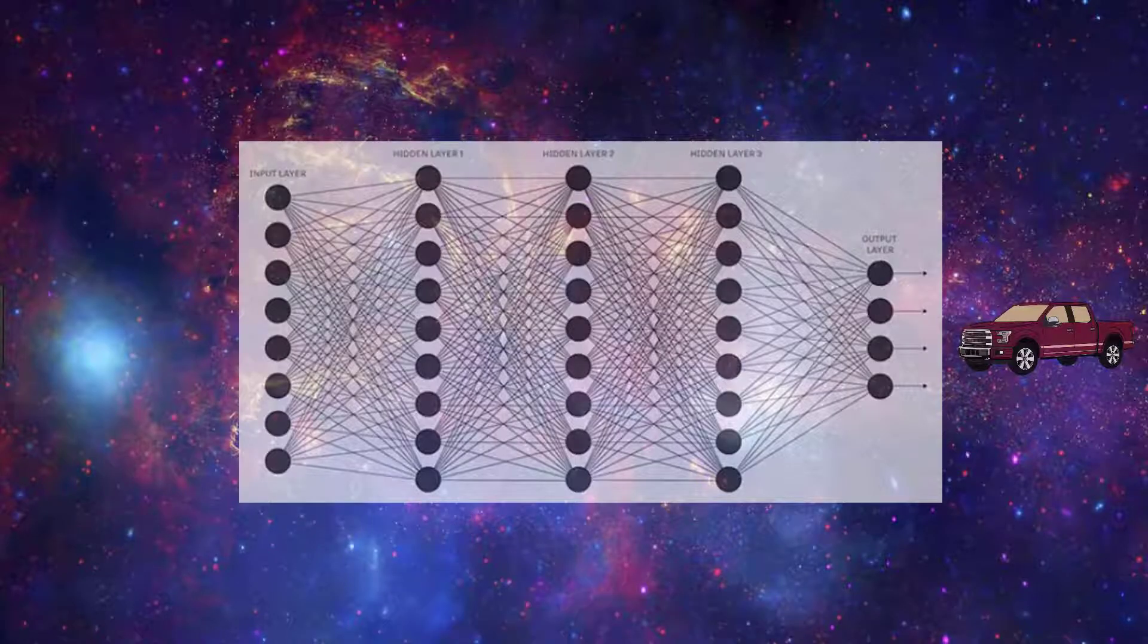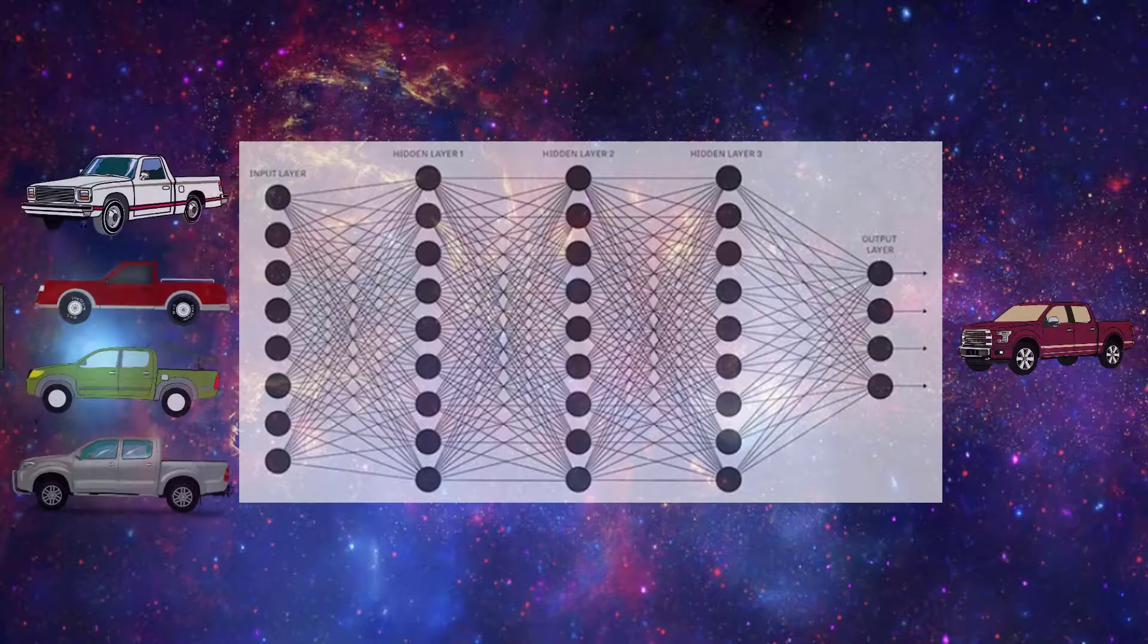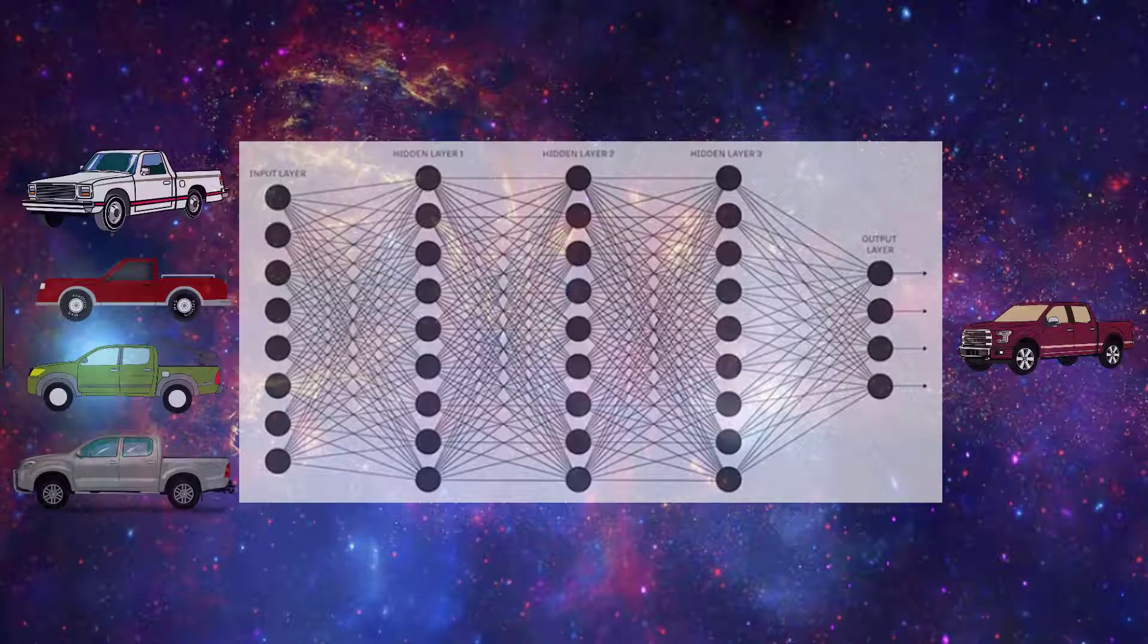So after we do this, then all that's left is just to train the model on our new data. Again, during this training process, the weights from all the layers we kept from our original model are going to stay the same, and only the weights in our new layers will be updating.